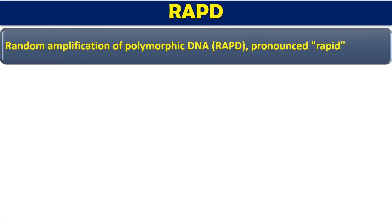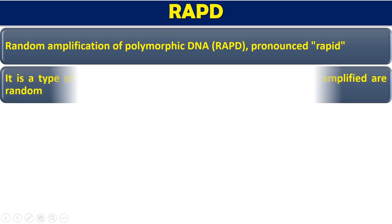So first, what is the RAPD test? It is random amplification of polymorphic DNA, pronounced RAPD. Looking at the name, it is called random amplification, meaning we are going to amplify DNA sequences randomly by using random oligonucleotide random primers. We are not going to use specific primers against specific sequences; we are going to use a random primer. So random oligonucleotides will be used, and random amplification will occur. By this, we are going to identify the polymorphic forms of DNA.